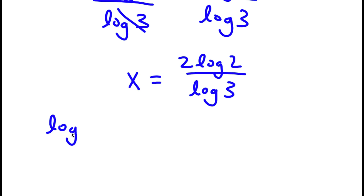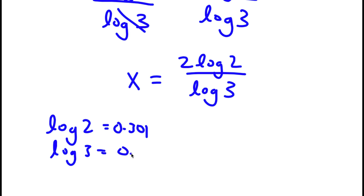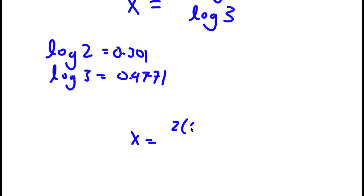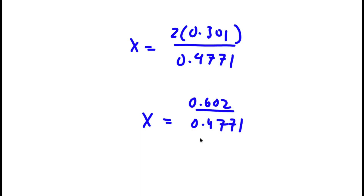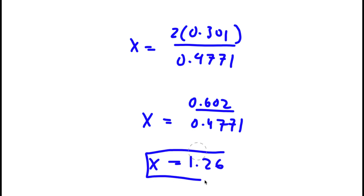Now, log 2 is equal to 0.301 and log 3 is equal to 0.4771. So x equals 2 times 0.301 over 0.4771, which is 0.602 over 0.4771, which equals approximately 1.26. So x ≈ 1.26 is my answer.